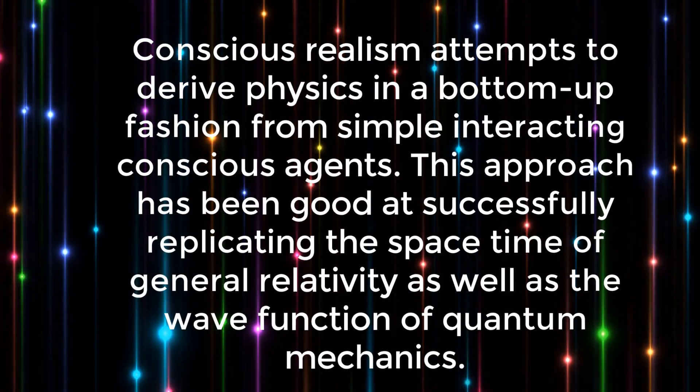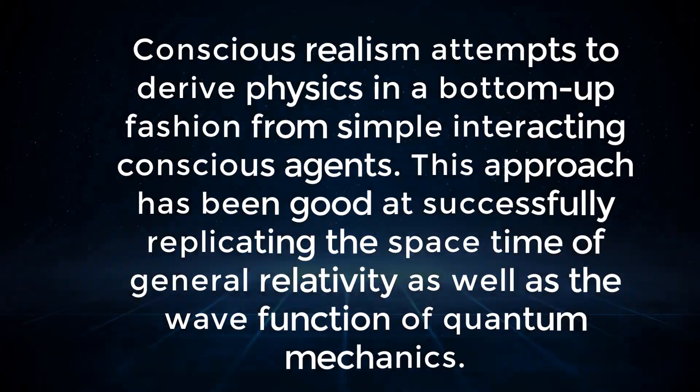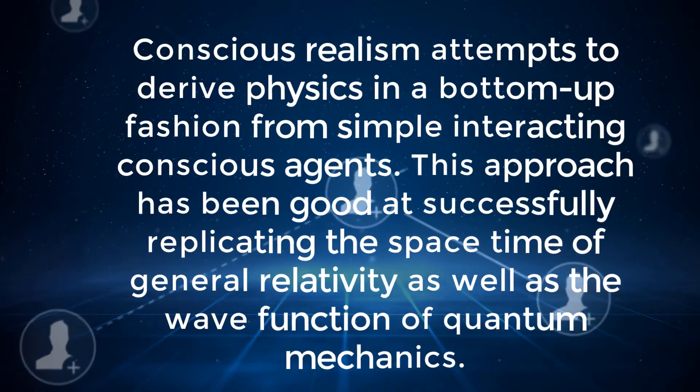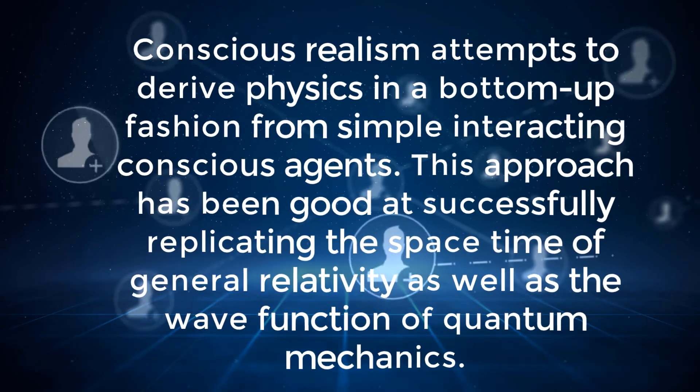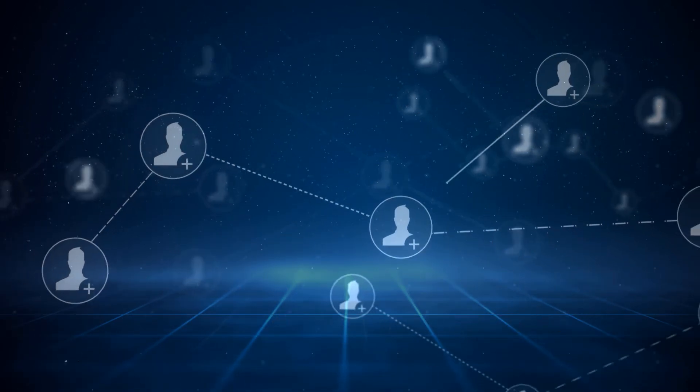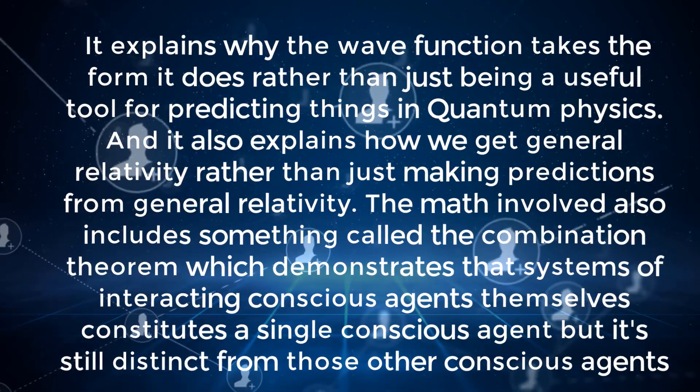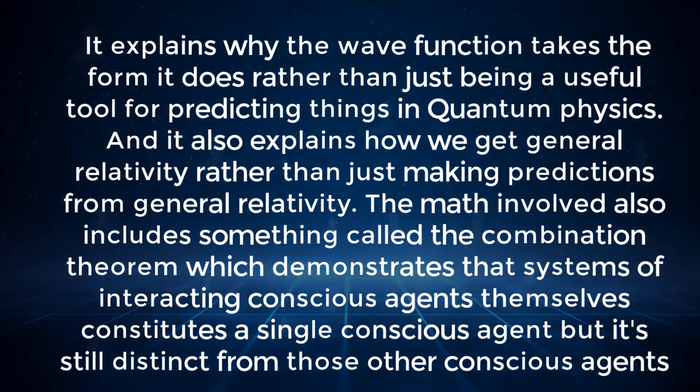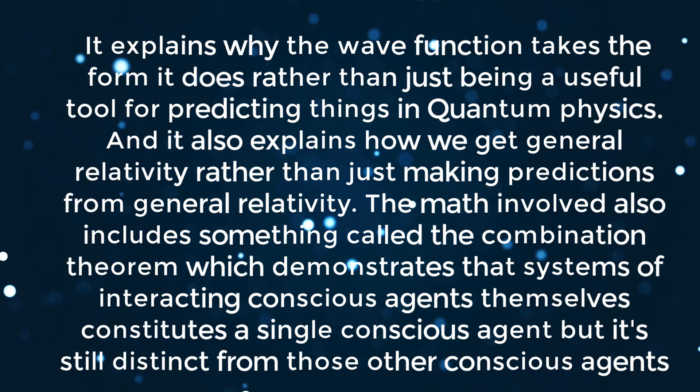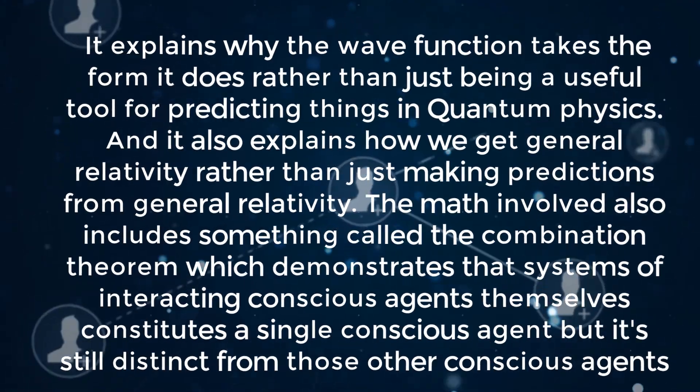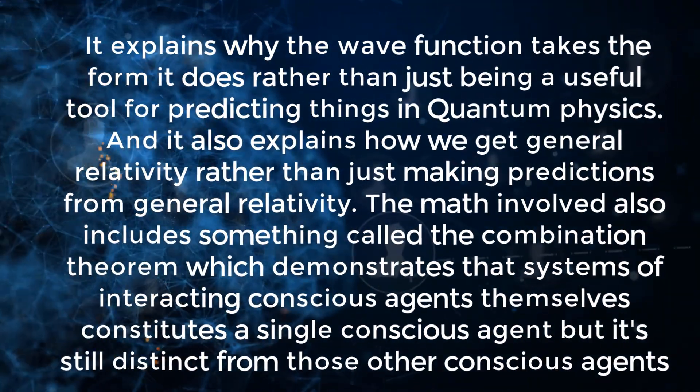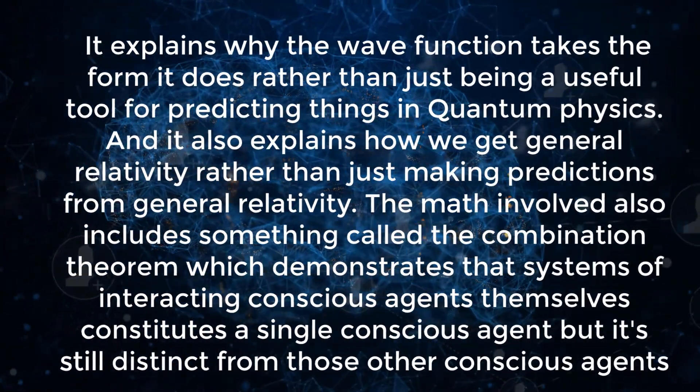Conscious realism attempts to derive physics in a bottom-up fashion, from simple interacting conscious agents. This approach has been good at successfully replicating the space-time of general relativity, as well as the wave function of quantum mechanics. In other words, it explains why the wave function takes the form it does, rather than just being a useful tool for predicting things in quantum physics. And it also explains why we get general relativity, rather than just making predictions from general relativity. The math involved also includes something called the combination theorem, which demonstrates that systems of interacting conscious agents themselves constitute a single conscious agent, but that this conscious agent is still distinct from the other conscious agents.